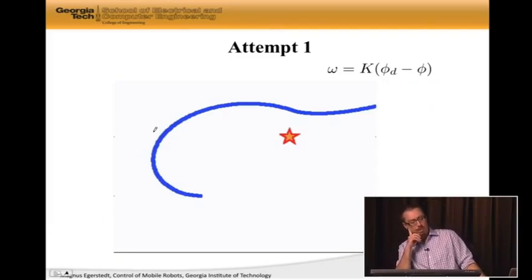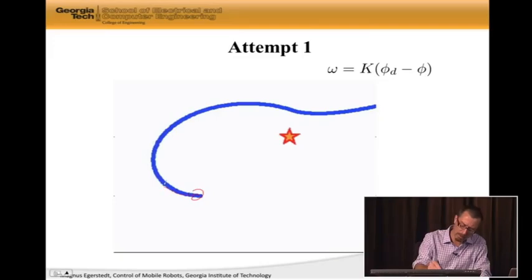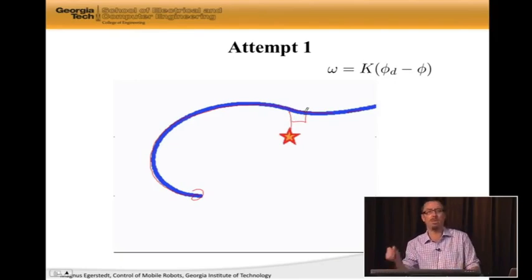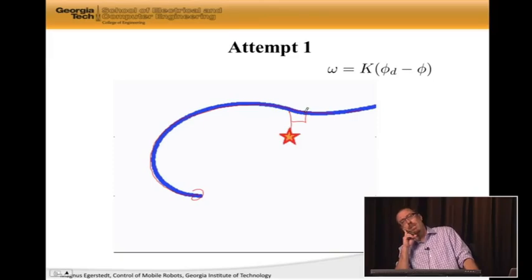This was attempt one. Well, the robot started out, it started out looking in the wrong direction, and then it started to turn nicely, maybe not enough, but then something happened. And it seemed to happen roughly when the angle here was close to minus pi over two. But in fact, this is exactly what happened. The problem here is that I forgot that I was dealing with angles.